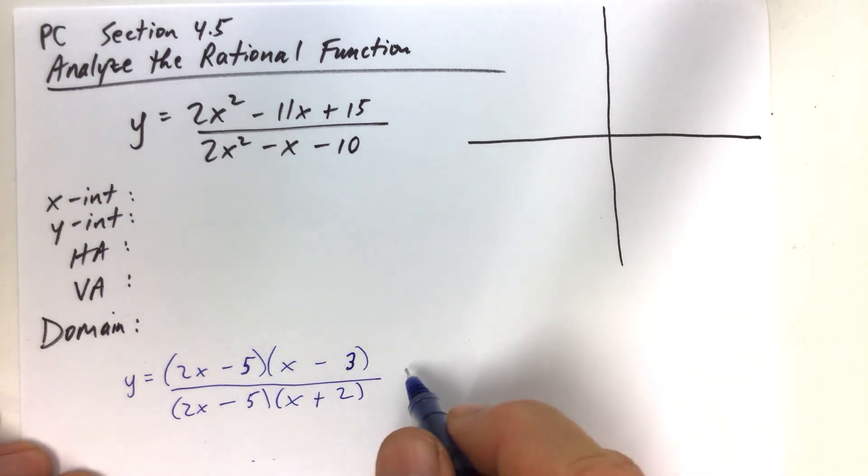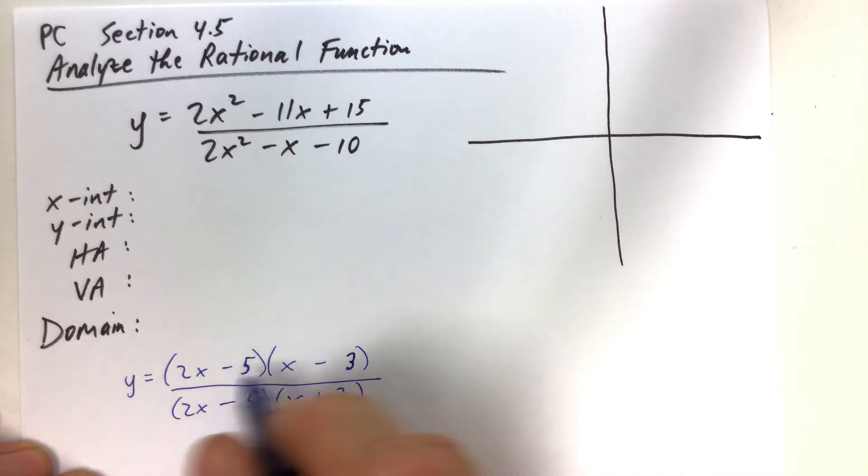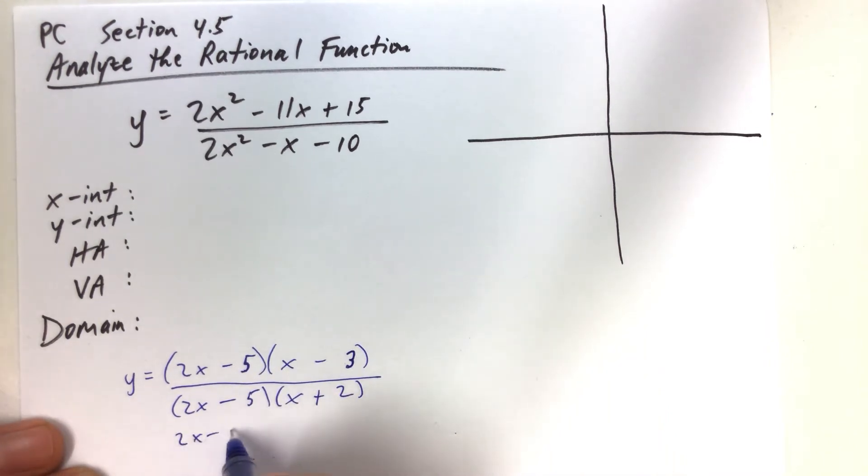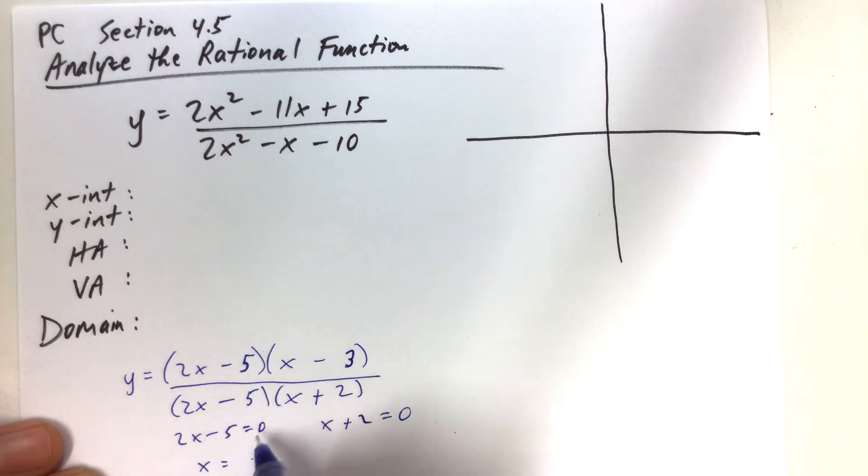So what we want to do is, first of all, factor both numerator and denominator. And when we set the denominator equal to 0, we find a couple things. So thing number 1, let's find the x values first. So if we add 5 to both sides and divide both sides by 2, we get x is equal to 5 halves.